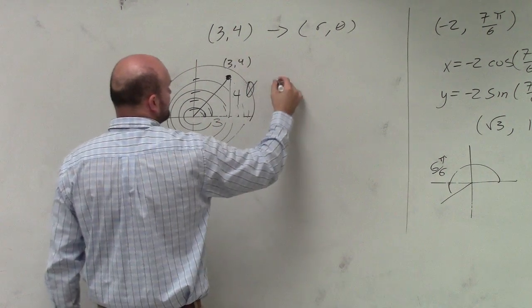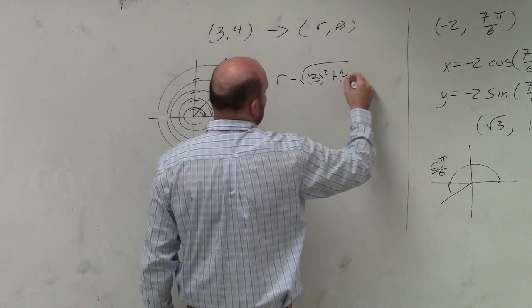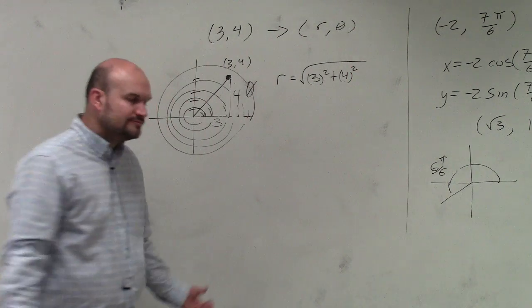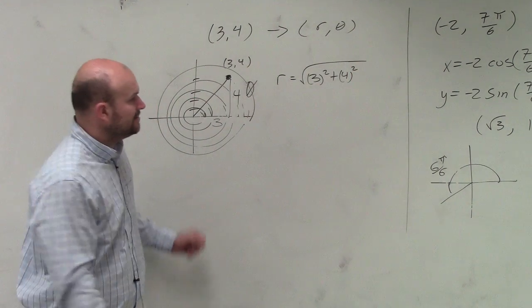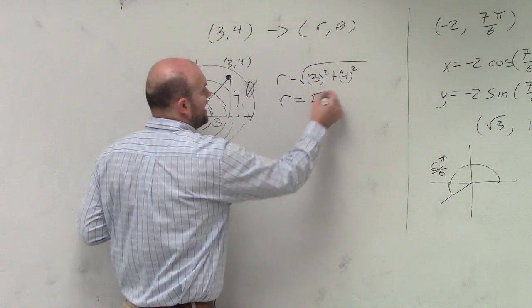So to find r, remember r equals the square root of 3 squared plus 4 squared. I'm just simplifying the Pythagorean theorem, which gives us 9 plus 16, the square root of 25, which equals 5.